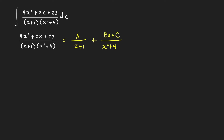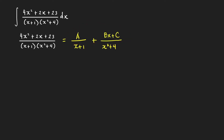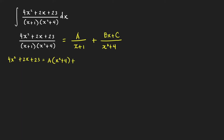In this video I'm going to show you how to find the values of A, B, and C in two ways. Let's start with the first method, which is the one usually taught in the classroom. The standard method is to first multiply both sides by the LCD, and we'll get 4x² + 2x + 23 = A(x² + 4) + (Bx + C)(x + 1).